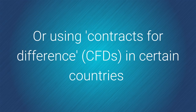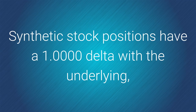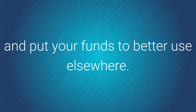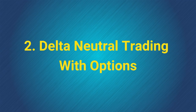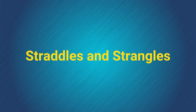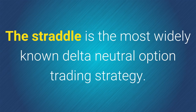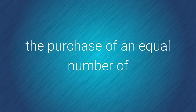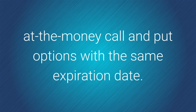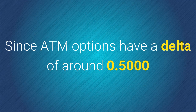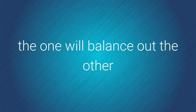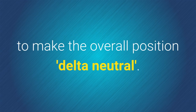Or, using contracts for difference — otherwise known as CFDs — in certain countries where they're allowed. Synthetic stock positions have a 1.0 delta with the underlying, so you can receive the same outcomes and put your funds to better use elsewhere. Now let's look at delta neutral trading with options, and in particular, straddles and strangles. The straddle is the most widely known delta neutral option trading strategy, defined by the purchase of an equal number of at-the-money call and put options with the same expiration date. Since at-the-money options have a delta of around 0.5, and since call deltas are positive and put deltas are negative, the one will balance out the other to make the overall position delta neutral.